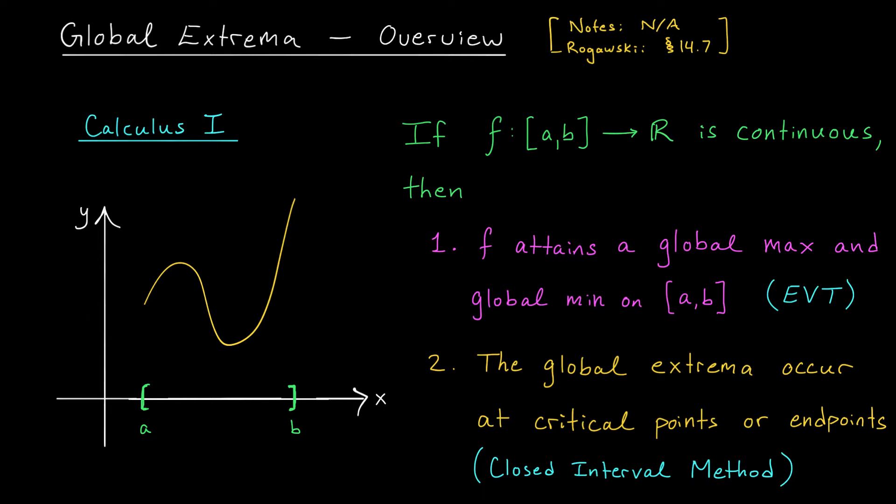The first of these results is called the extreme value theorem or sometimes just the EVT. It says that if you're dealing with a nice continuous function defined on a closed interval a-b, then that function is guaranteed to have a global max and a global min somewhere in this interval.